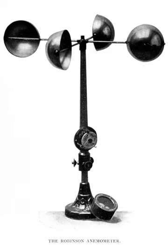In the tube anemometer the dynamic pressure is actually being measured, although the scale is usually graduated as a velocity scale. If the actual air density differs from the calibration value — due to differing temperature, elevation, or barometric pressure — a correction is required to obtain the actual wind speed. Approximately 1.5 percent should be added to the velocity recorded by a tube anemometer for each 1,000 feet above sea level.